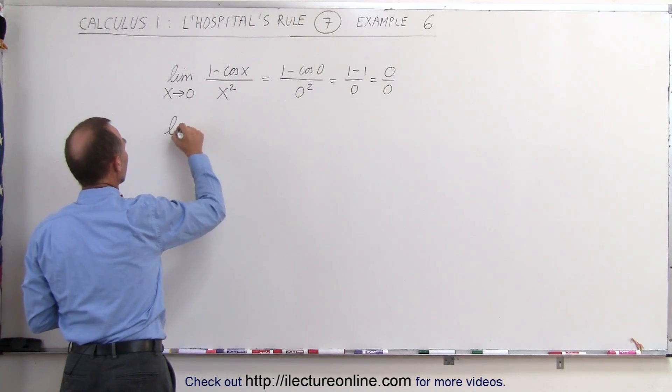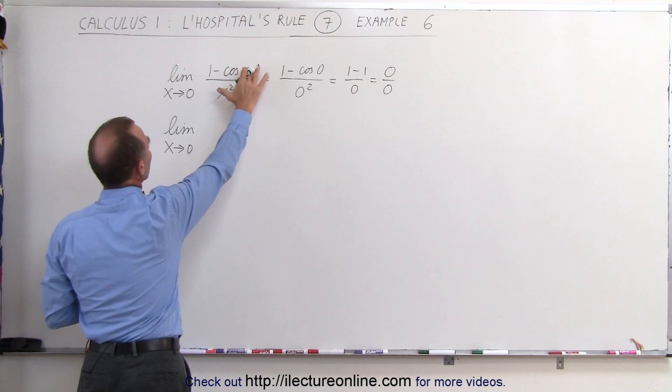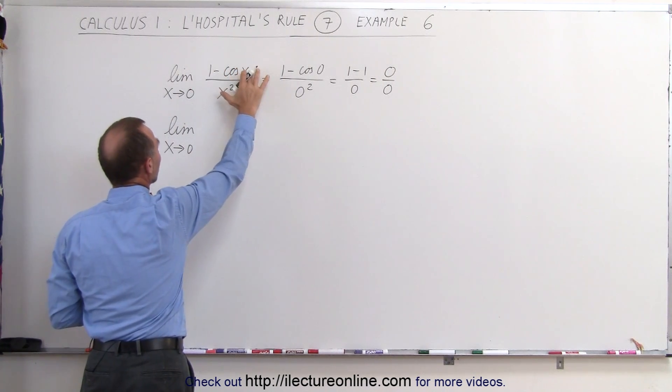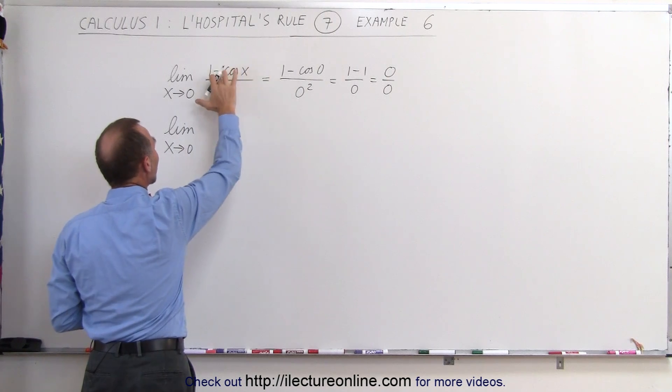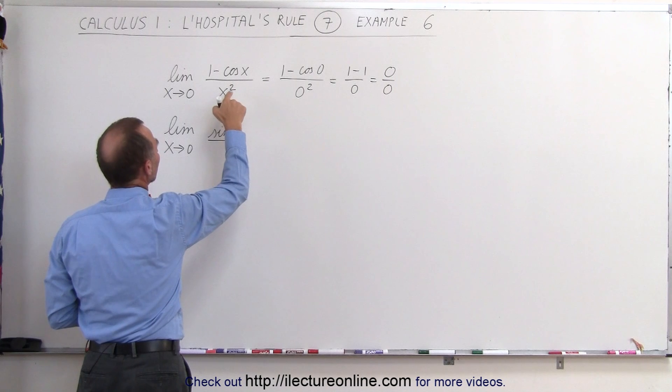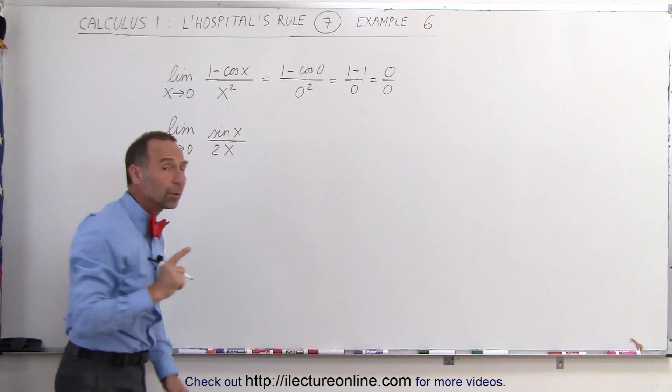This becomes equal to the limit as x approaches 0 of the derivative of the numerator. Of course, the derivative of 1 is 0. The derivative of the cosine of x is the minus sine of x times the minus becomes the plus sine of x divided by the derivative of x squared is 2x.